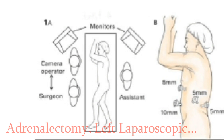Operative preparation: the patient's hair should be removed with electric hair clippers with minimal trauma to the skin. For a left adrenalectomy, the surgeon stands on the patient's right side. The camera operator stands to the left of the surgeon and the assistant on the left side of the patient.